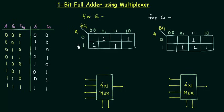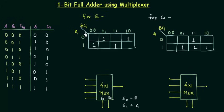Now we have to decide on our selector variables. In a 4×1 MUX there are two selector variables: S0 and S1. I will assume S0 is B and S1 is A. If I had taken B and Cin as S0 and S1, it would be easier, but I want to show every possibility in this method. So S0 = B and S1 = A.